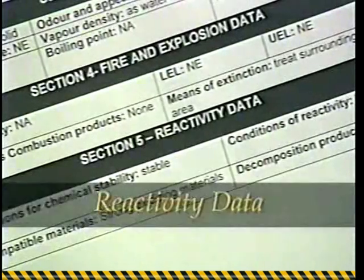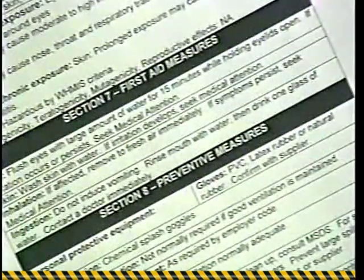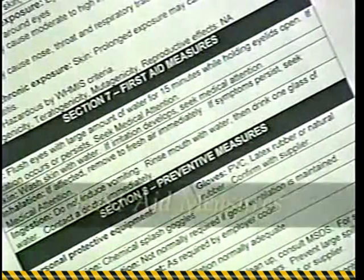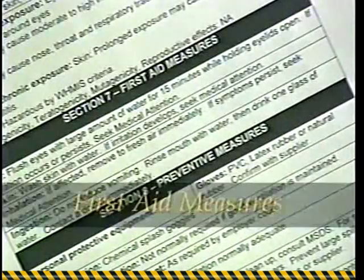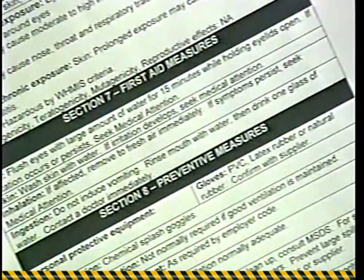Reactivity Data can provide warnings — for example, about products that should never be mixed together. Toxicological or Health Hazard Properties tells you what could happen if you accidentally swallow, ingest, or inhale the product. First Aid Measures provide you with important information to respond in an emergency. Read this and be prepared to respond before an emergency occurs.